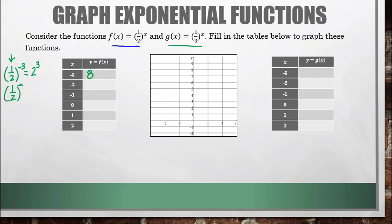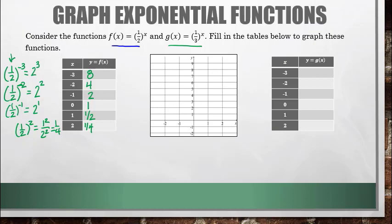1/2 to the negative 2 is the reciprocal of 1/2 (which is 2) to the positive 2, so we get 4. 1/2 to the negative 1 is 2 to the 1, which is 2. 1/2 to the 0 power — anything to the 0 power is always 1. 1/2 to the 1 is 1/2. And 1/2 squared is 1 squared over 2 squared, which is 1/4. So the graph points are: negative 3, 8; negative 2, 4; negative 1, 2; 0, 1; 1, 1/2; 2, 1/4.